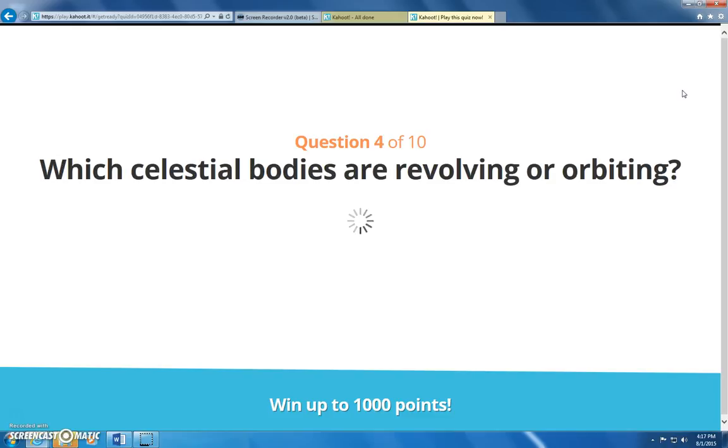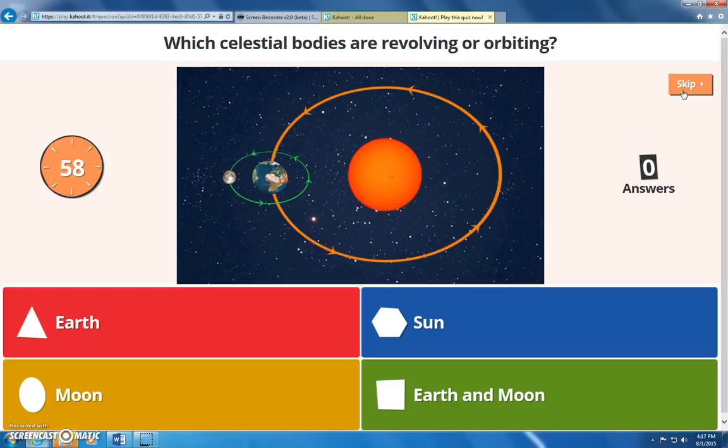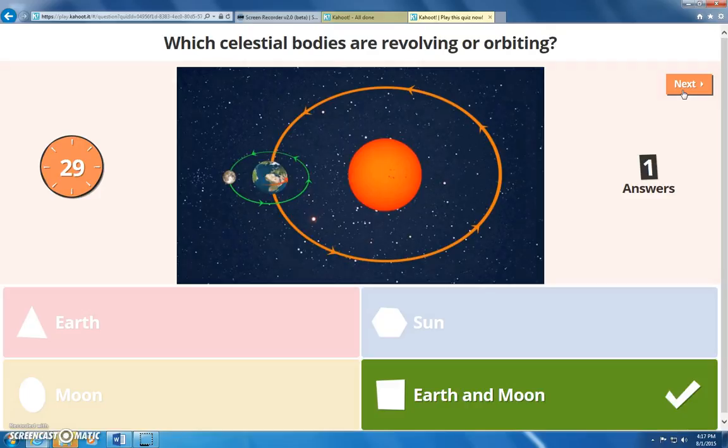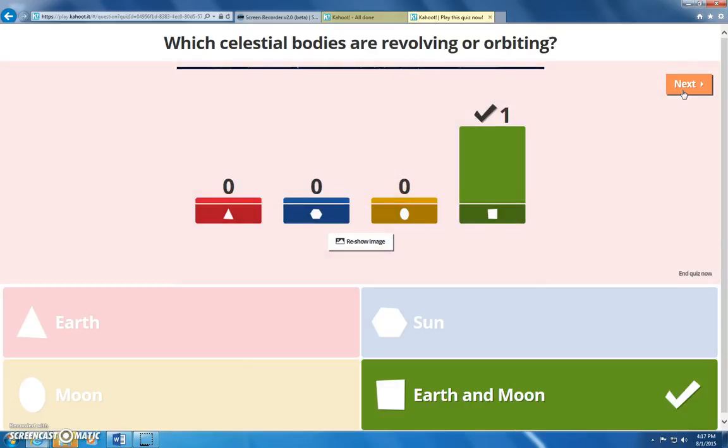So, the next question is more review. Which celestial bodies are revolving or orbiting? And just a quick reminder, celestial bodies are things or planets or moons that are in our solar system. They are bodies. So, which ones are revolving or orbiting? That is right. The earth revolves around the sun and the moon orbits around the earth.